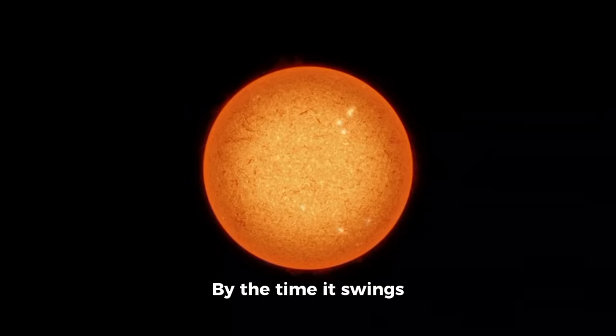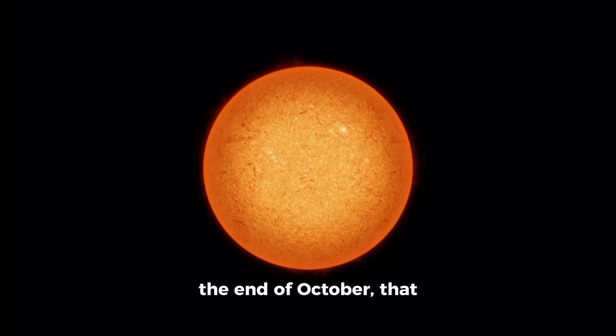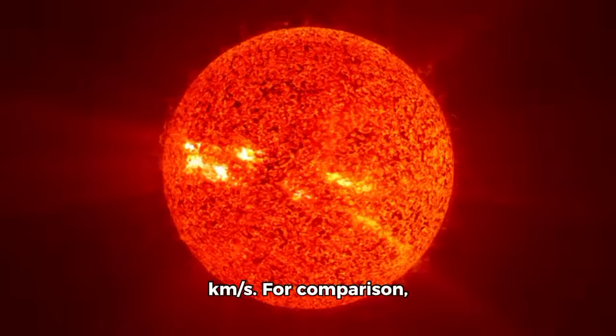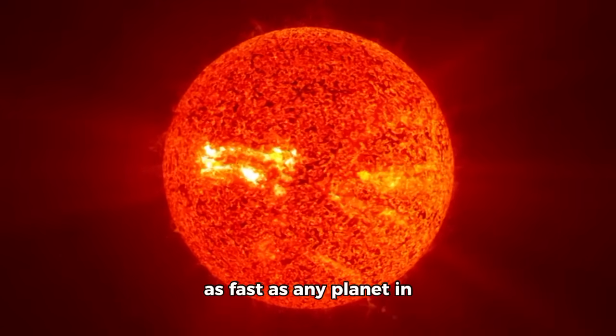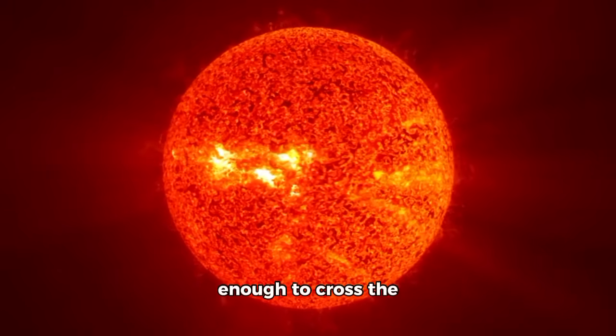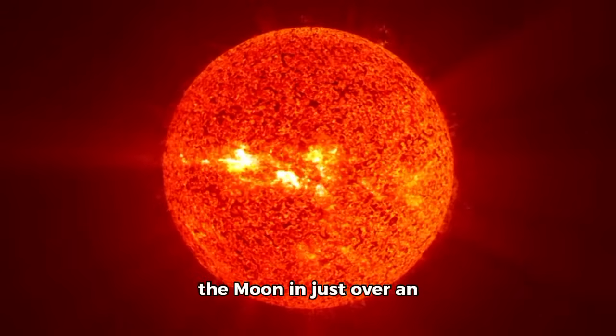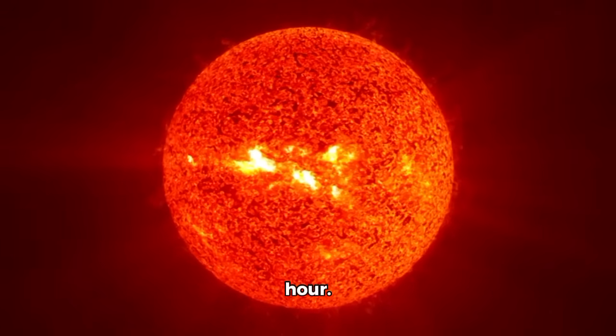By the time it swings closest to the sun at the end of October, that speed will peak near 68 kilometers per second. For comparison, that's more than twice as fast as any planet in the solar system, fast enough to cross the distance from Earth to the moon in just over an hour.